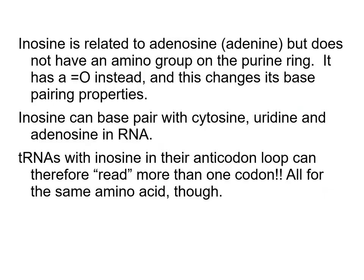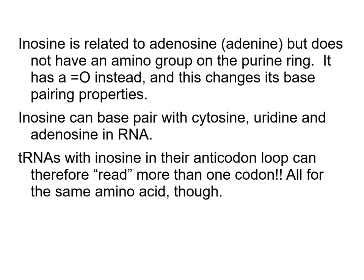The end result is that because some tRNAs can read more than their exact complementary codon, you don't need 61 different tRNAs for all sense codons. There are other reasons for this as well, but this wobble via inosine is one example. You may have gotten the impression from earlier courses that the anticodon matches the codon exactly in standard base-pairing, but that's not true — there are different ways a single anticodon can read more than one codon.